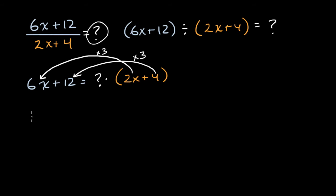If I take three times 2x plus four, we can try it out. Well, we can see that when we distribute that three, three times 2x is going to be equal to 6x, and then three times four is going to be equal to 12. So the answer to our original question is three. Our question mark is three in this situation.